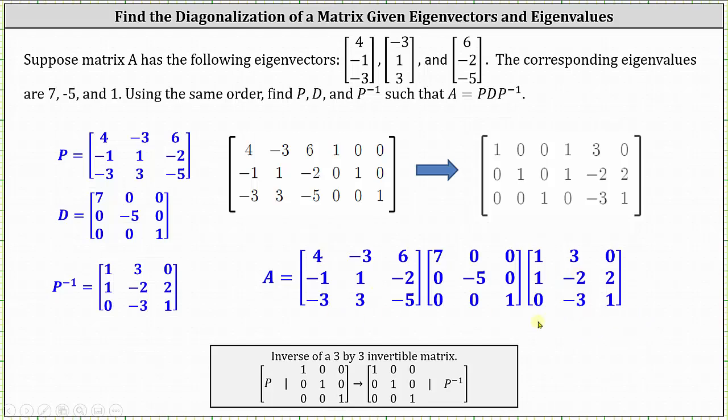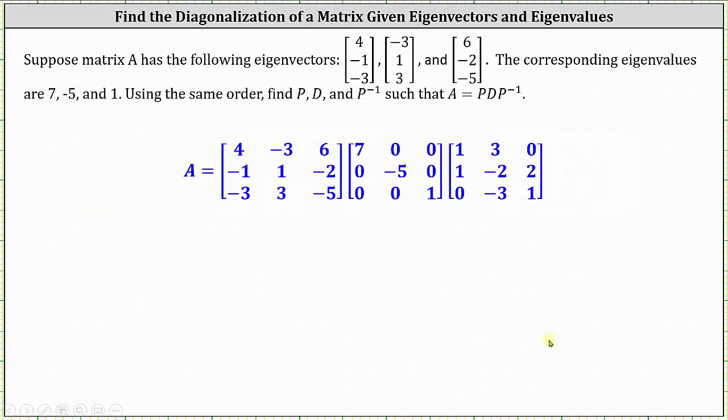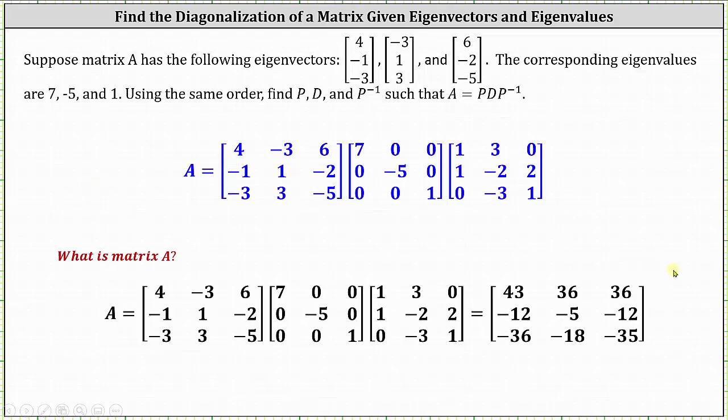So this is what the question is asking us to find. If we did want to find matrix A, we would have to determine the product of these three matrices, which I thought would be worth showing. If you pause the video and multiply these matrices out from left to right, matrix A is the matrix with entries 43, 36, 36; negative 12, negative five, negative 12; negative 36, negative 18, negative 35.